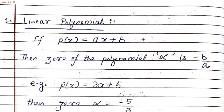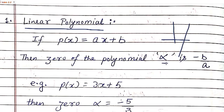Such polynomials make straight lines, and the point where they intersect the x-axis is called the zero of this polynomial. When we put that point in place of x, the whole value of the polynomial becomes zero. This point is denoted by the symbol alpha — a Greek alphabet, like we have alpha, beta, gamma, delta. This zero of the polynomial is denoted by alpha, and alpha is always equal to minus b by a.